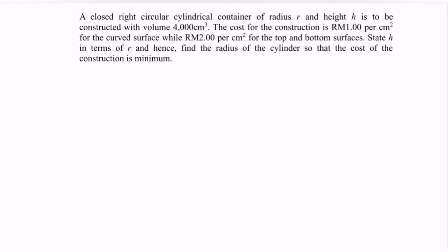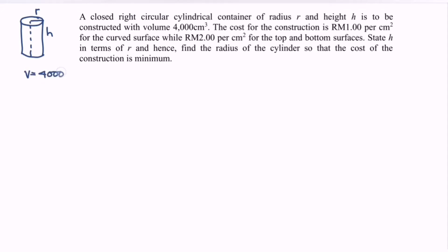Hi everyone, welcome to my channel. In this video I'm going to discuss an example of an optimization problem: a closed right circular cylindrical container with radius R and height h, to be constructed with a volume of 4000 cm³, meaning V = 4000 cm³.